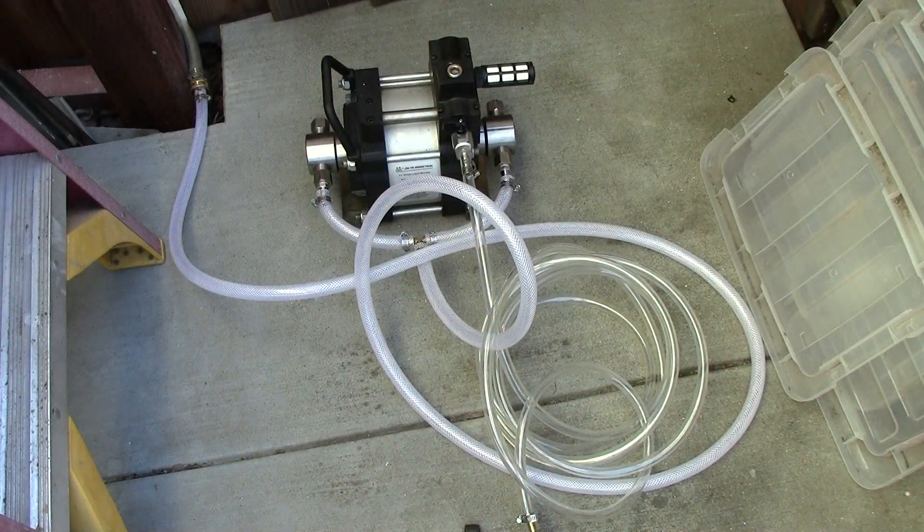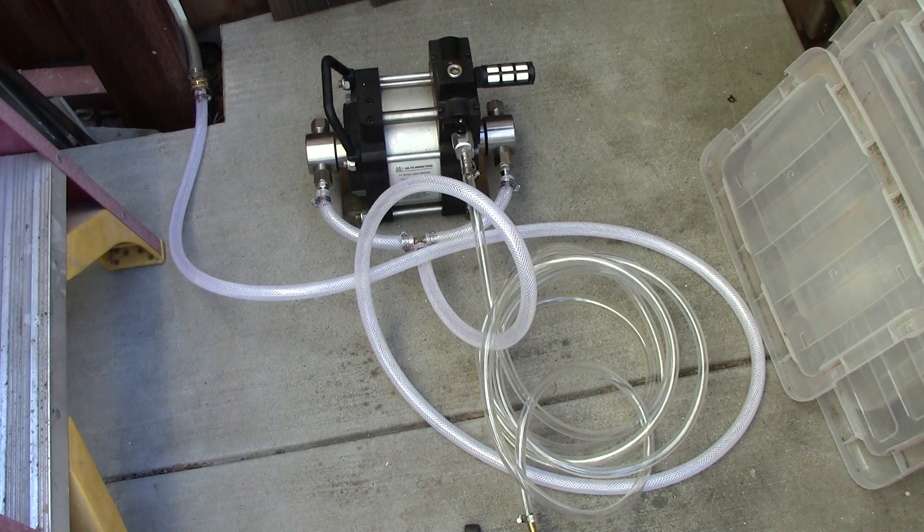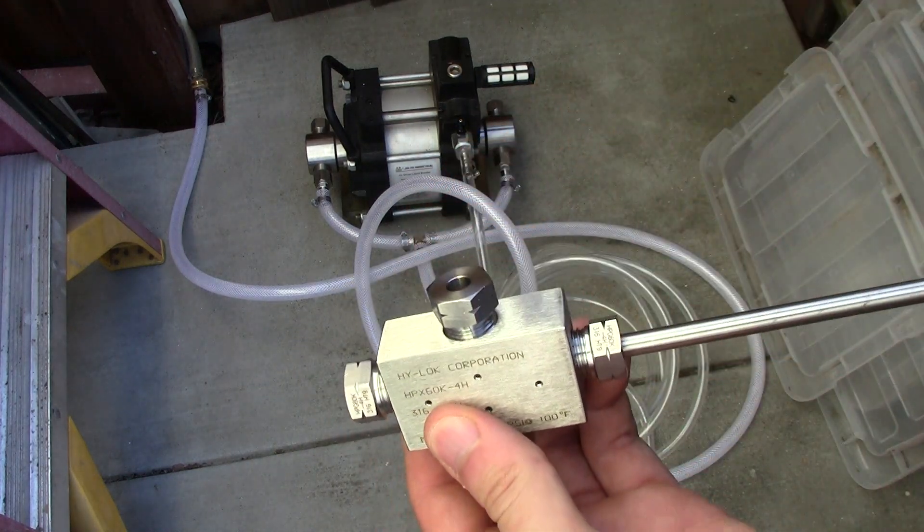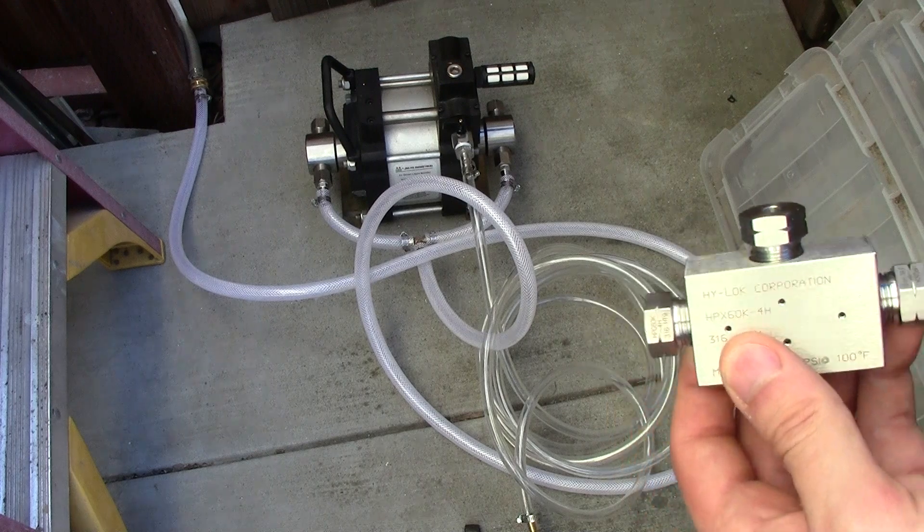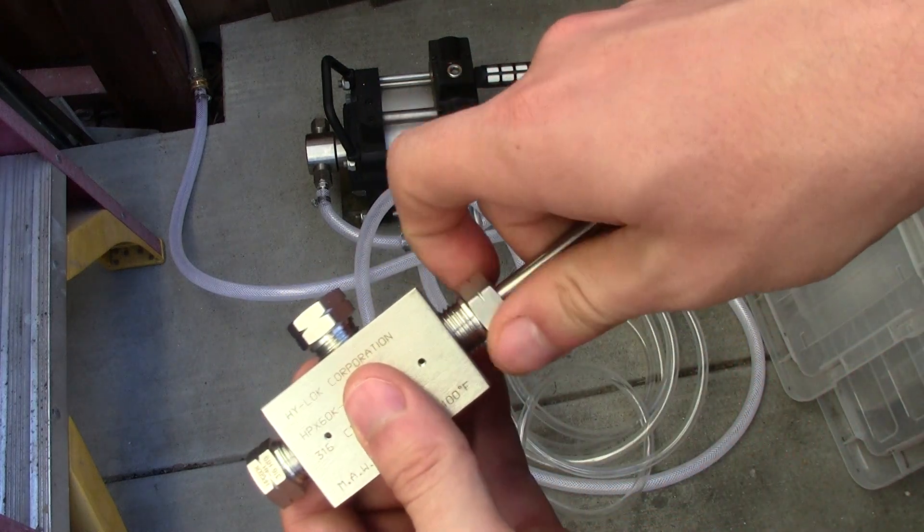Now I'm going to have the nipple come in here and nipple come in here, combining the two inputs. Now it's combining the two inputs into one output and goes up to my hose and goes inside of my cutting head. Let me go ahead and show you how this works.